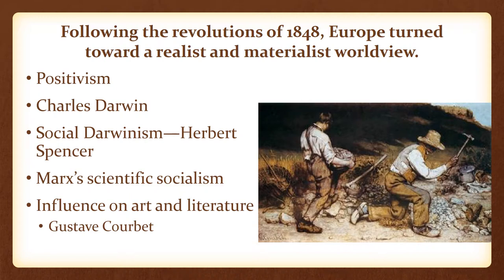Realism followed the Romantic period. For art, Gustave Courbet is probably the most prominent artist to know. His works are very simple and rejected idealized values. Realism replaced Romanticism and reflected the disillusionment many felt with modern life.